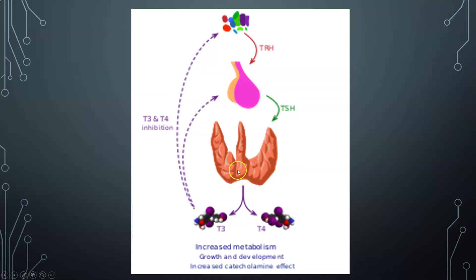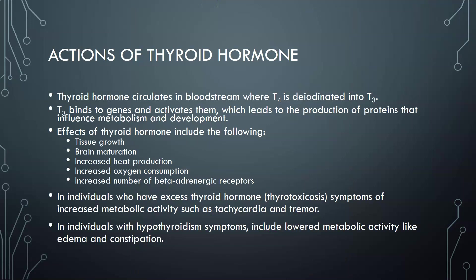The hypothalamus makes TRH, which travels to the anterior pituitary. The anterior pituitary releases TSH, which goes to the thyroid. The thyroid follicular cells then produce T3 and T4, which enter the bloodstream and increase metabolism. T3 and T4 — especially T3 — then serve as negative feedback to the anterior pituitary and hypothalamus, shutting off production of TRH and TSH when levels are adequate.